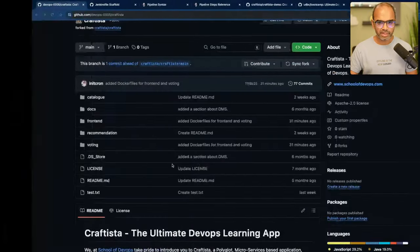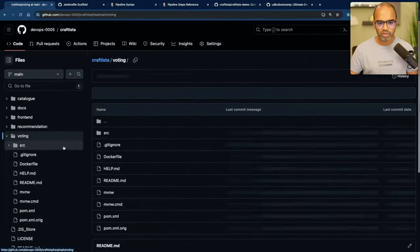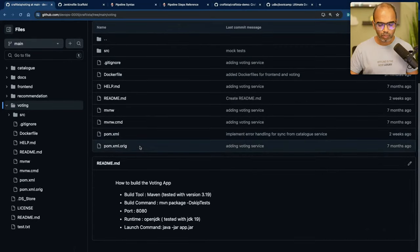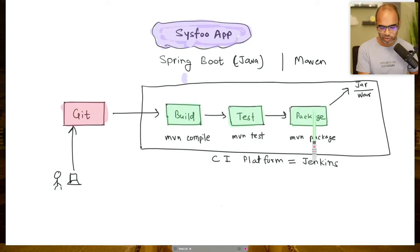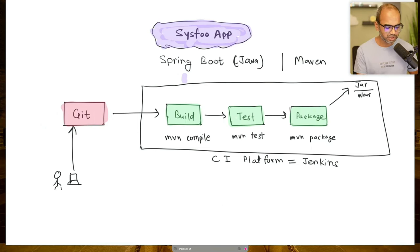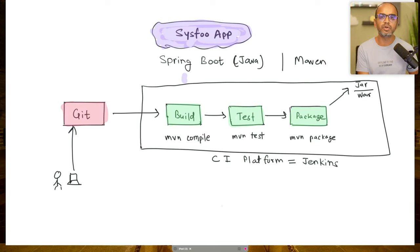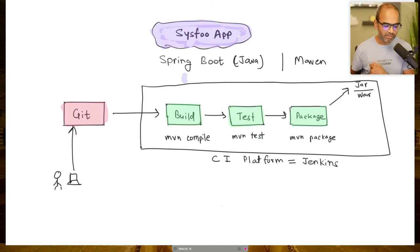When we say continuous integration pipeline, let's take this Spring Boot Java-based service. What we want to do is every time you make changes to the code and commit to the Git repository, you want to run build, test, and package jobs. Those are typically the jobs in a CI pipeline — you can add or remove more, but we'll start with a simple three-stage pipeline: build, test, and package. This is a Java application written with the Spring Boot framework, using Maven as a build tool. So for each stage we'll have some Maven command to run: Maven compile, Maven test, and Maven package.